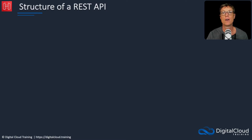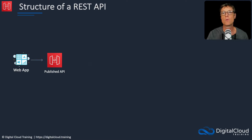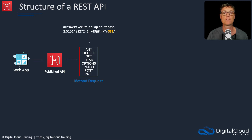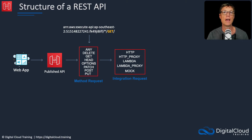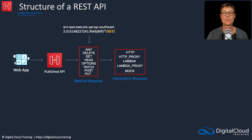Let's look at the structure of a REST API. We have a published API and a web app on the internet connecting to it. Within the API, we can configure a method request, which defines which methods we're going to allow and how they're integrated — mapping method requests to integrations. The methods are similar to HTTP methods: DELETE, GET, POST, and PUT, and each can be mapped to an integration that takes you through to the various endpoints.